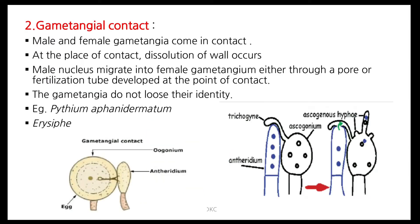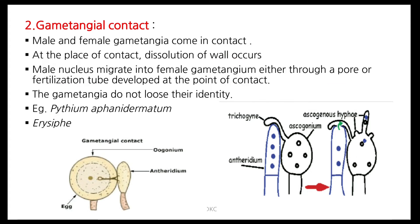Gametangial contact. Male and female gametangia come in contact. At the place of contact, dissolution of wall occurs. Then the male nucleus migrates into the female gametangia either through a pore or through a fertilization tube developed at the point of contact. The gametangia do not lose their identity. This is present in Pythium and Erysiphe. The left side picture is of Oomycetes and the right side is of Ascomycetes.